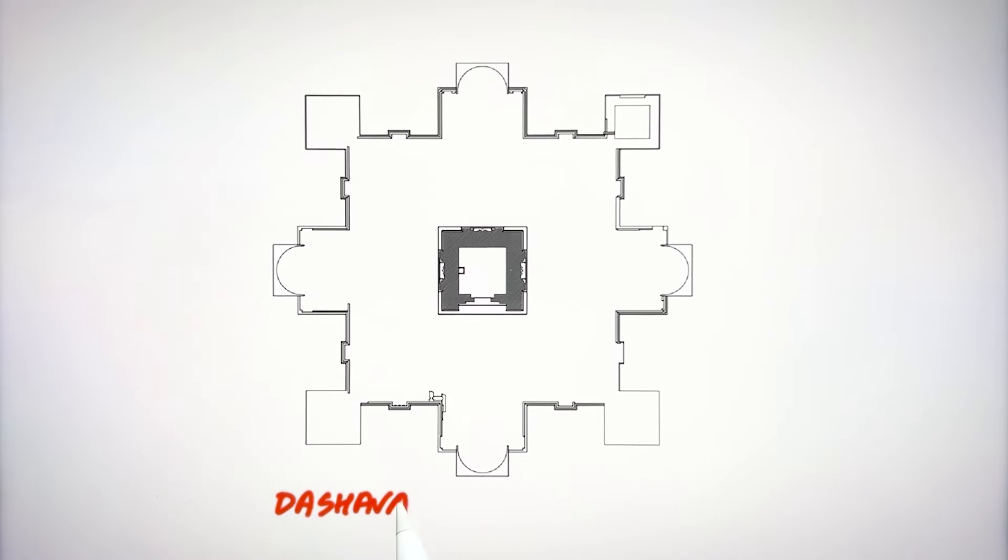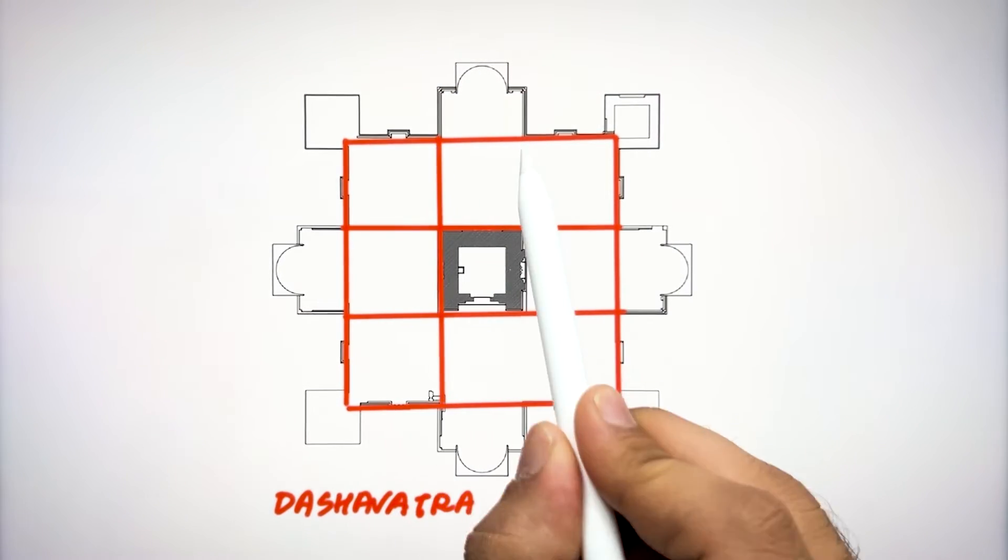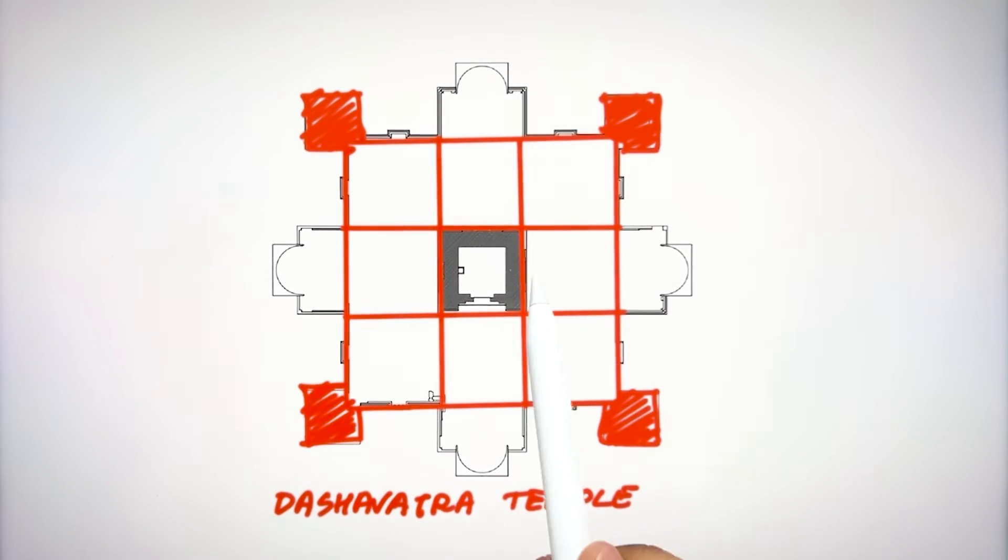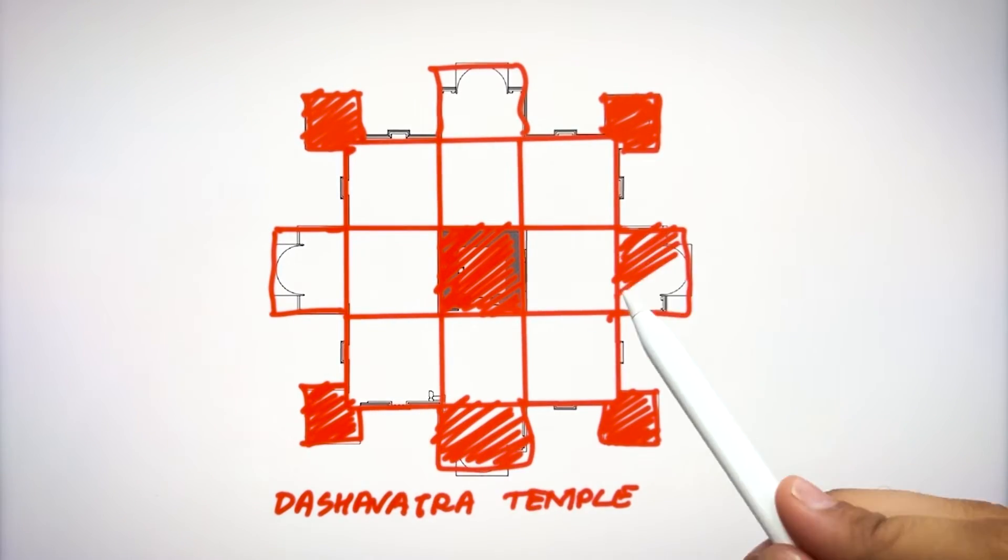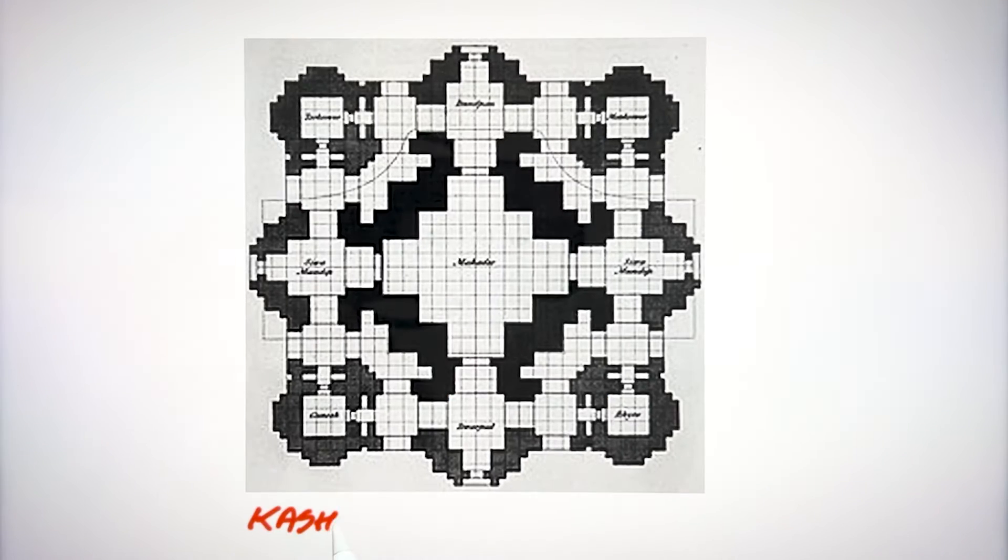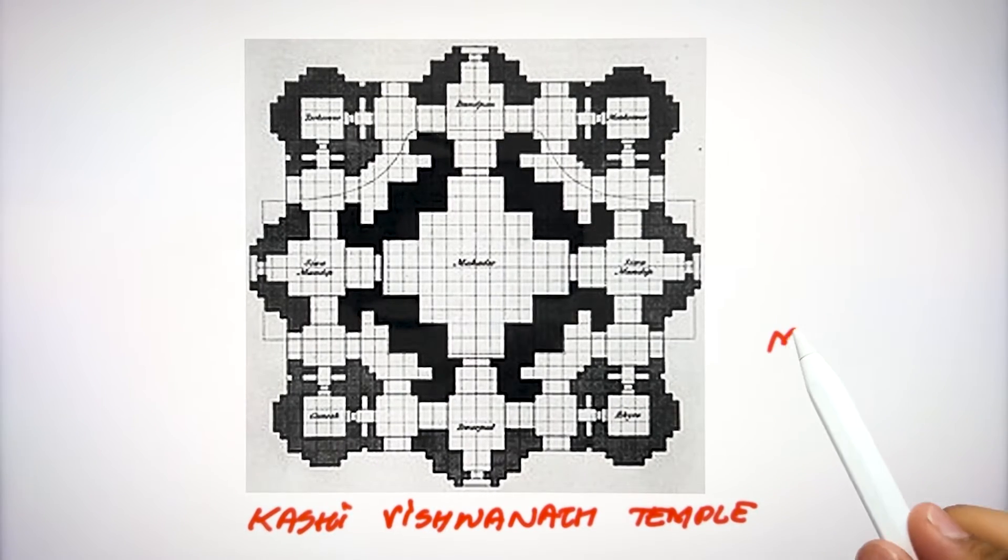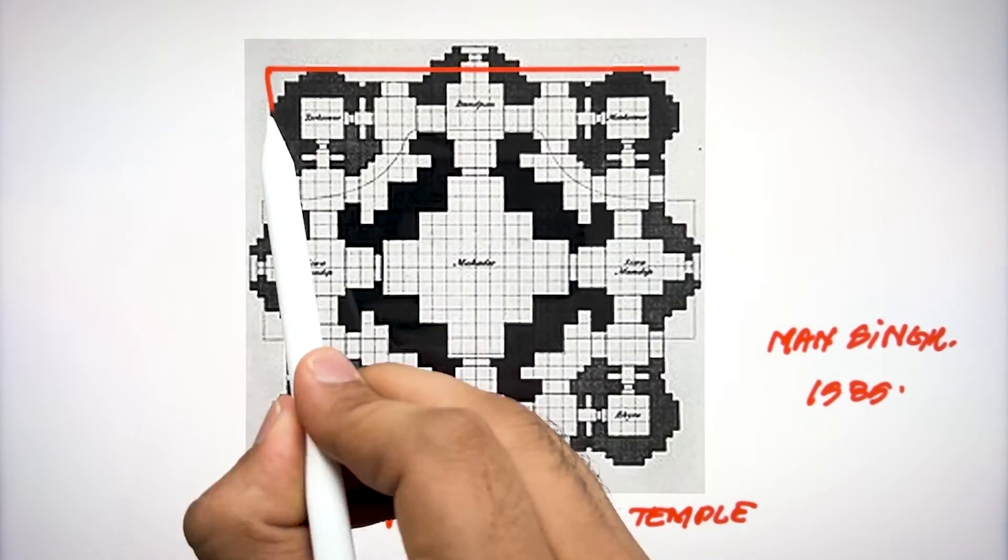This is the Dashavatara temple in India which also follows the principle of nine grid. Although the idea of temple is designed by the Vishnu Dharmottara Purana. But this Purana concept is also relatable to the nine grid concept.